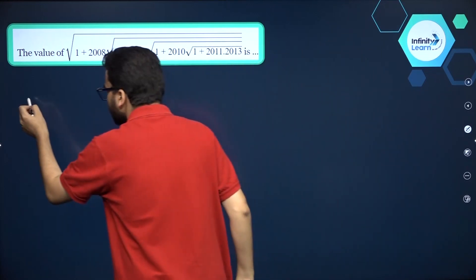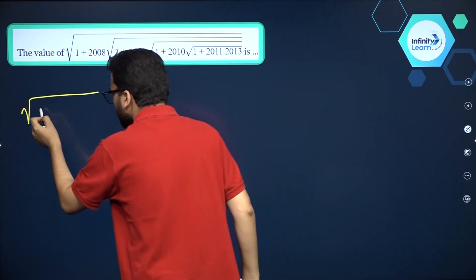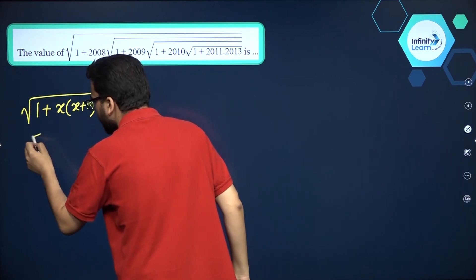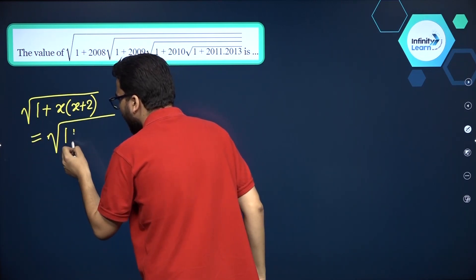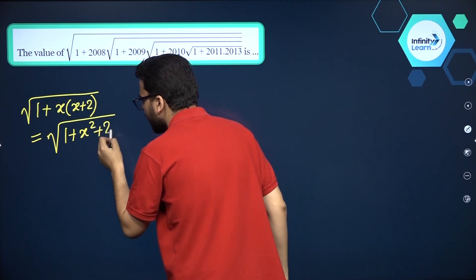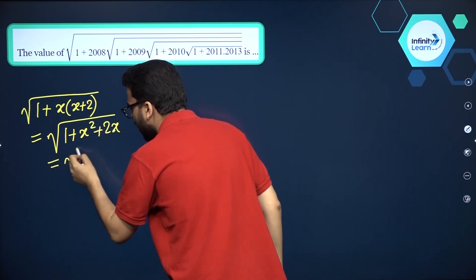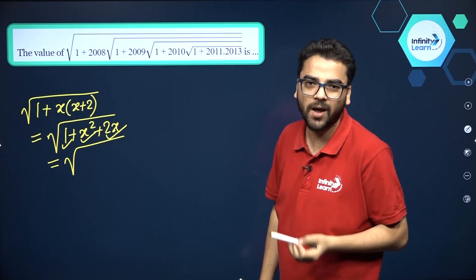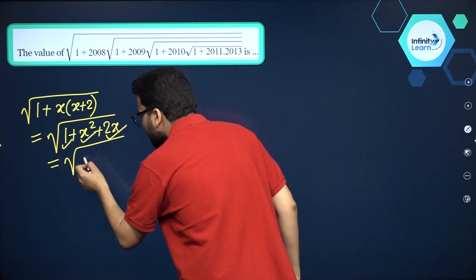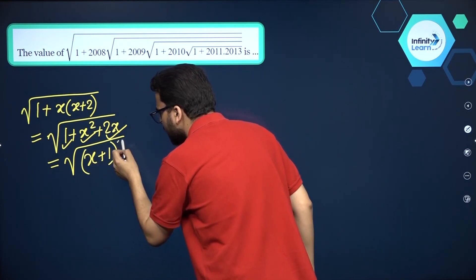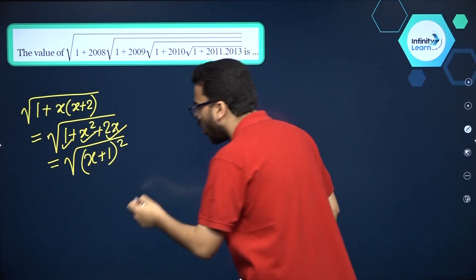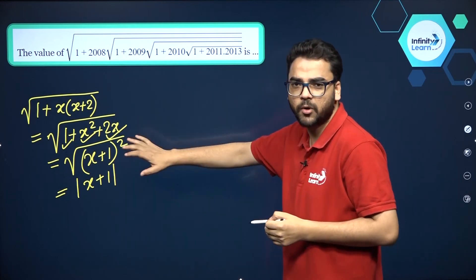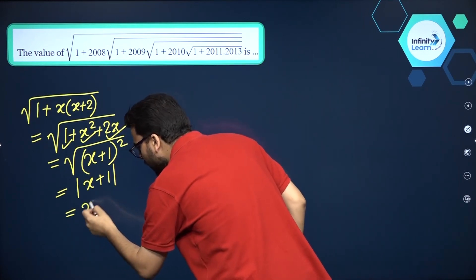And that simple formula is this: suppose if you have got square root of 1 plus X into X plus 2 — what is this equal to? You can see this is square root of 1 plus X square plus 2X, which is X square plus 2X plus 1. Using the identity A plus B whole square equals A square plus 2AB plus B square, this is nothing but X plus 1 whole square. So square root of X plus 1 whole square comes out equal to modulus of X plus 1, but since we are talking about positive numbers, we write it directly as X plus 1.